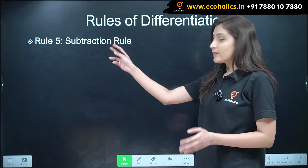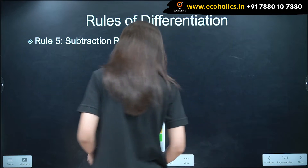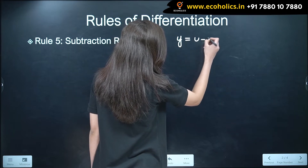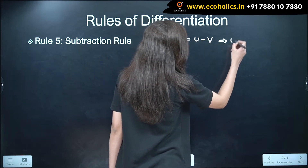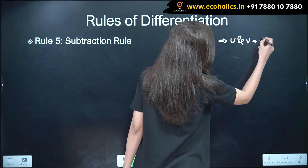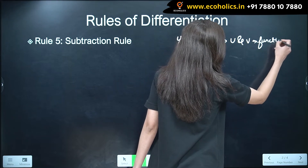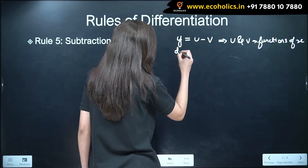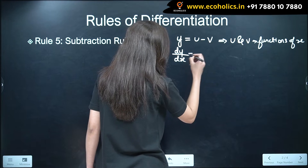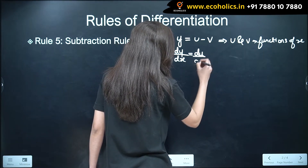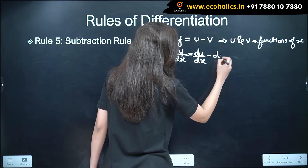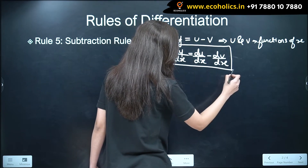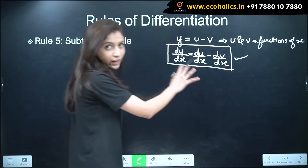Rule number five is the subtraction rule. When y is equal to u minus v, where u and v are differentiable functions of x, then dy by dx is equal to du by dx minus dv by dx. And this is our subtraction rule of differentiation.